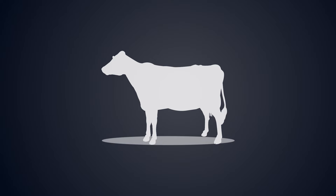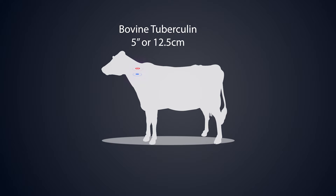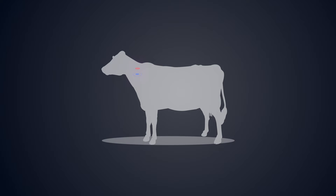The correct location of the injection site is critical to the accuracy and consistency of the test. The prescribed injection sites are situated at the border of the anterior and middle thirds of either side of the neck. The upper site for avian tuberculin is about 4 inches (10 cm) below the crest of the neck; the lower site for bovine tuberculin should be about 5 inches (12.5 cm) from the upper site in the same plane, along a line drawn parallel with the line of the shoulder. In young animals where there is insufficient space to adequately separate the sites, one injection shall be made on each side at identical sites in the center of the middle third of the neck, and this variance must be recorded.